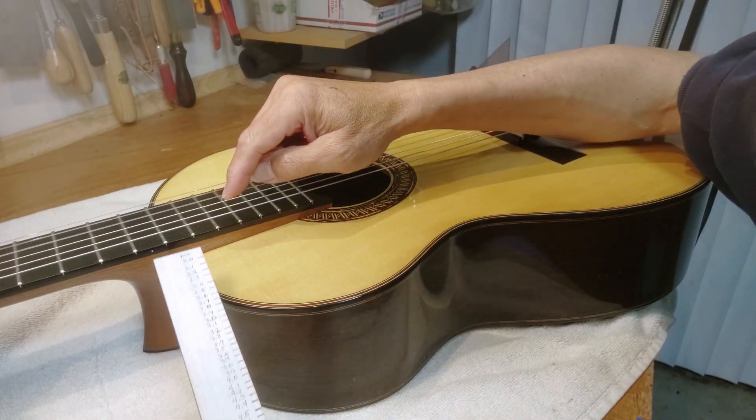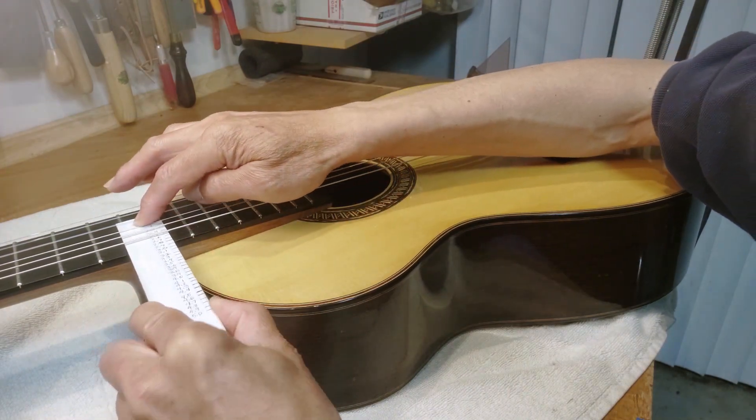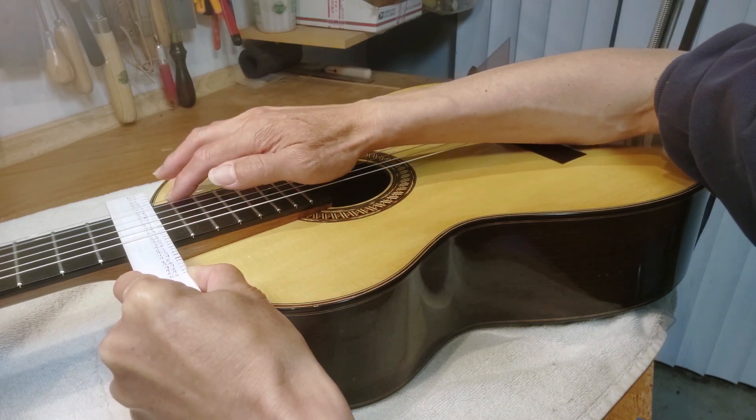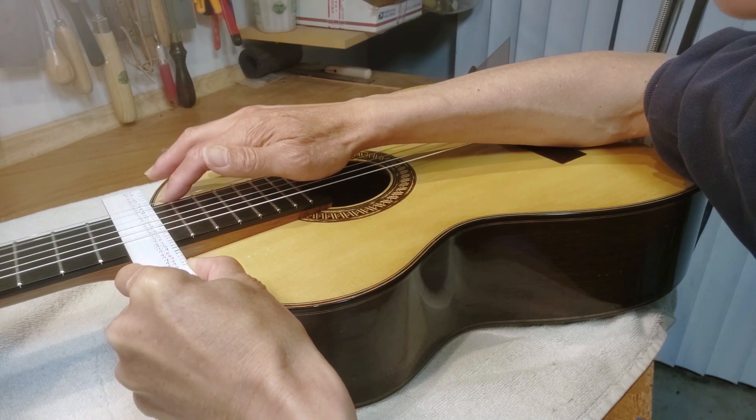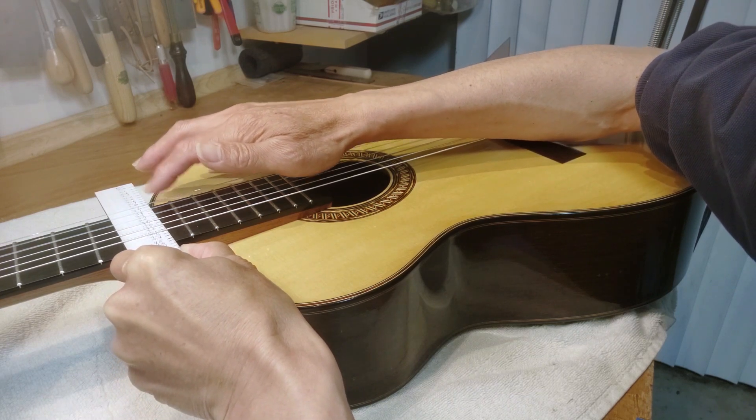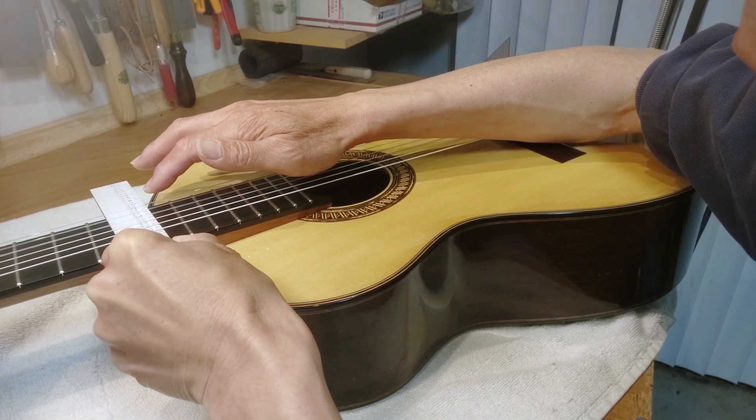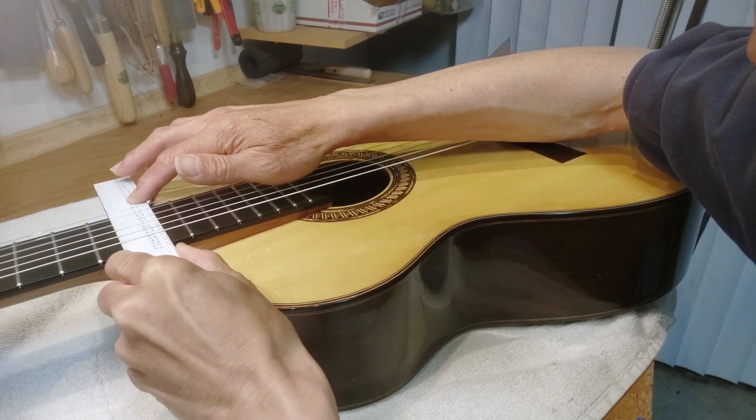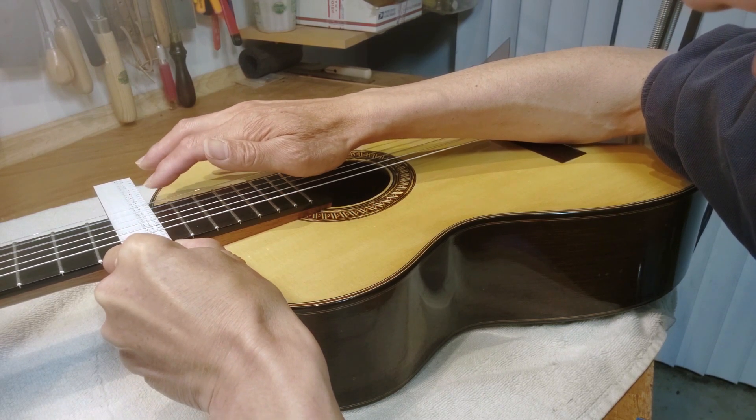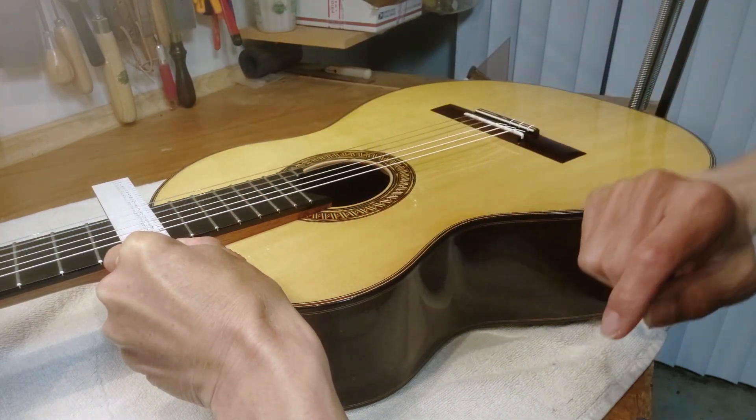Now let's measure another string. Ideally you want to measure the action on every string, but just to show you how to do it, let's try the first string now. You have a different kind of sound as I bang it. It's more of a plink, a quieter plink compared to the bass string, but I can still hear it. It's about disappeared at 3.3 millimeters. So that's our action on the first string.